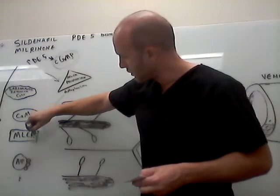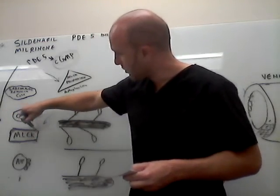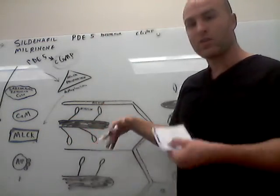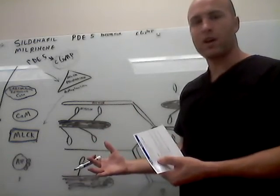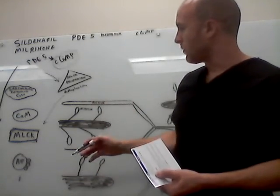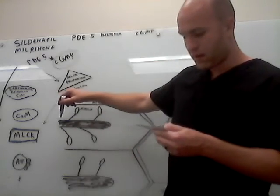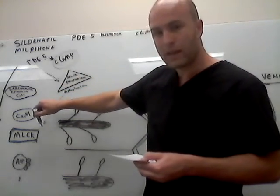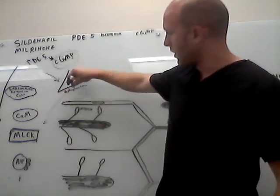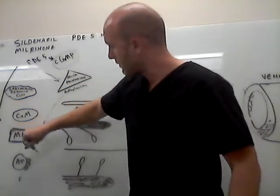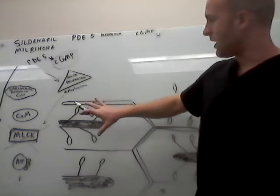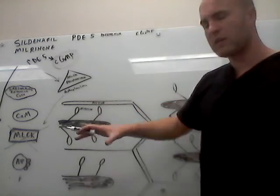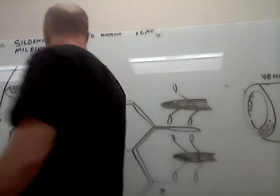See, this myosin light chain kinase is the thing that puts the phosphates on the myosin to cause contraction. So if this is being dephosphorylated, if you're taking the phosphates off of here, then this gets inactivated. If this gets inactivated, then this process isn't going to go forward.